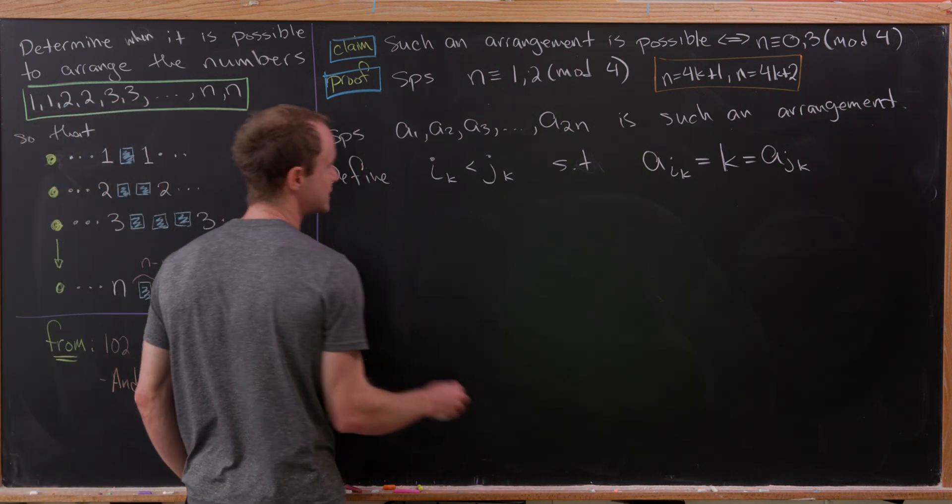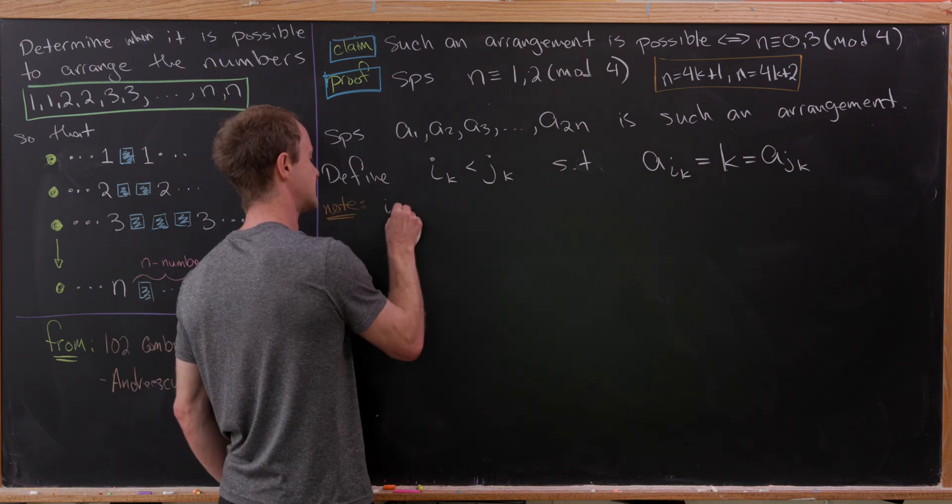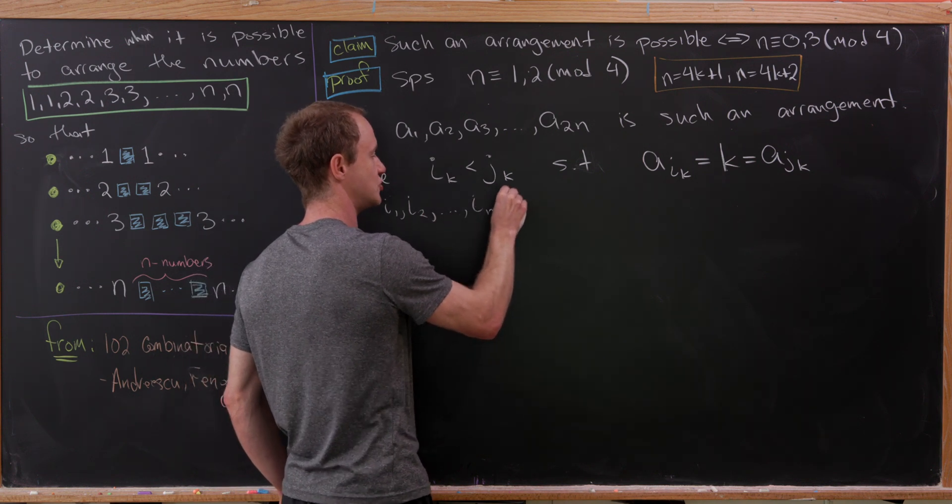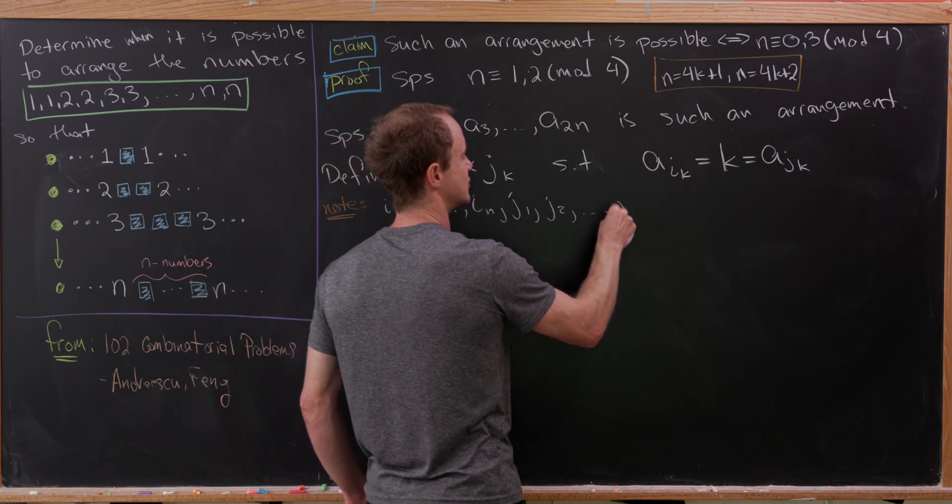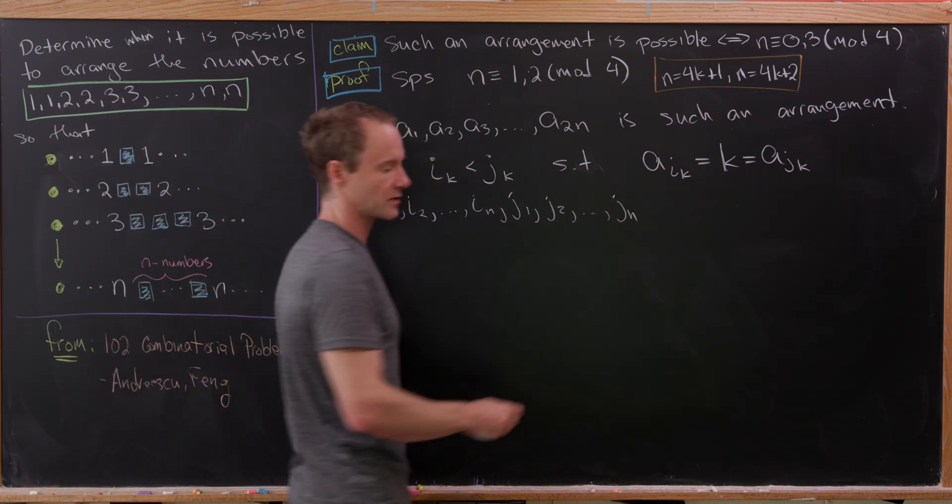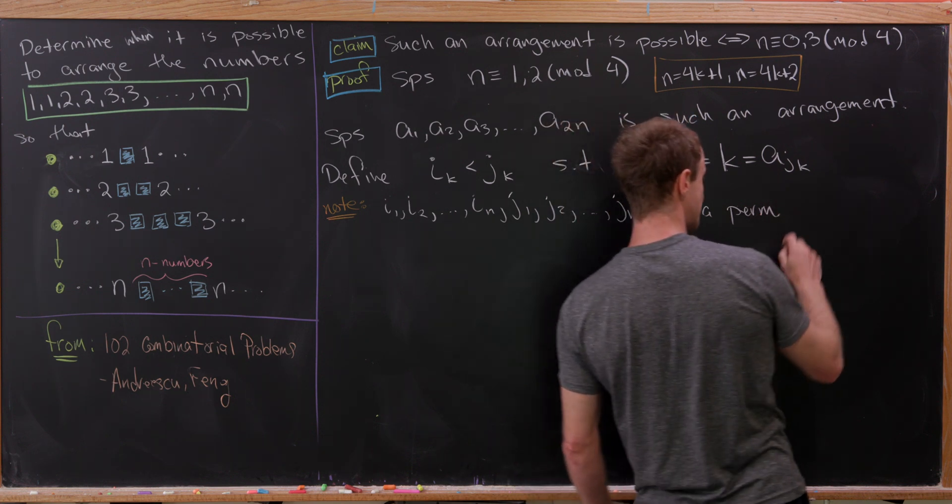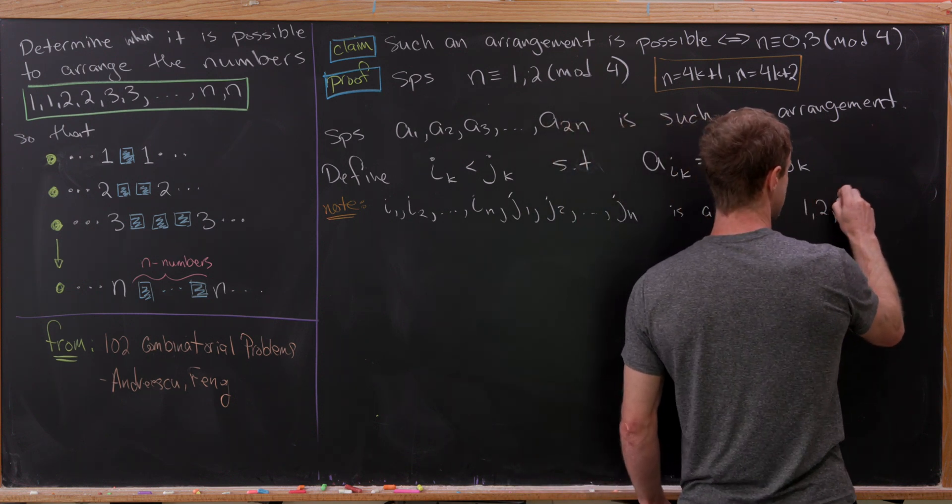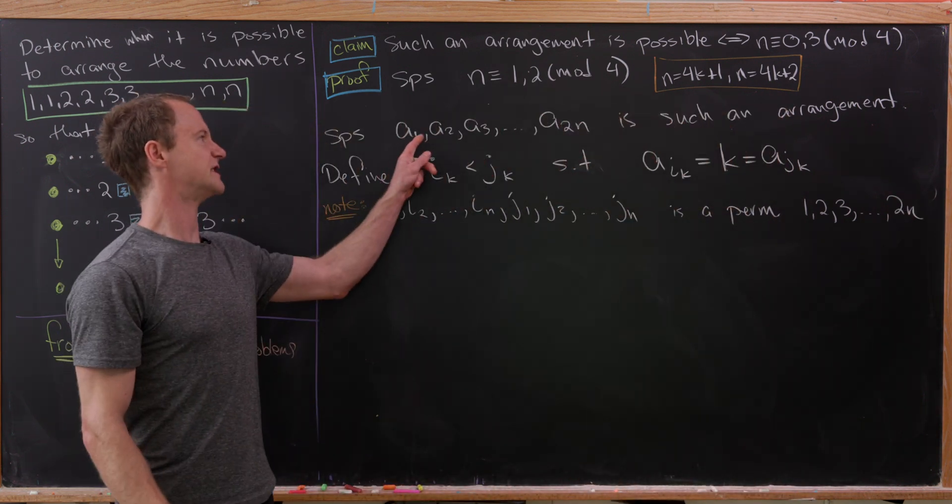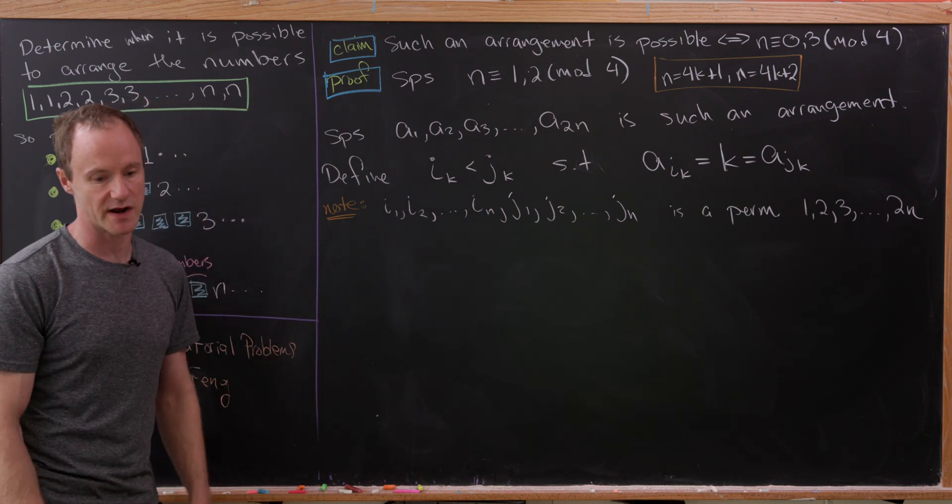Just so that we don't get ahead of ourselves, let's make the following observation. I sub 1, I sub 2, all the way up to I sub N, and then J sub 1, J sub 2, all the way up to J sub N, thinking of those as one set of numbers, is a permutation of the set 1, 2, 3 up to 2N. Because those are just all of these subscripts renamed. They're renamed in a way so that we have this condition, which is written right above.